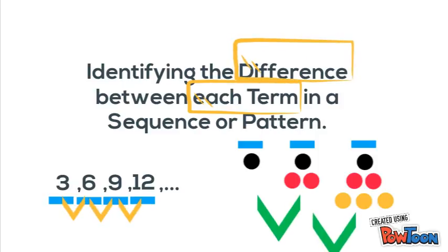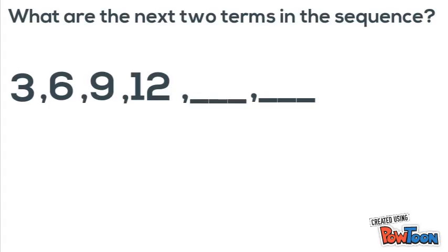Let's take a look at our first example. The first example asks, what are the next two terms in the sequence? In order to find the next two terms, we need to analyze the terms and see what exactly is happening.